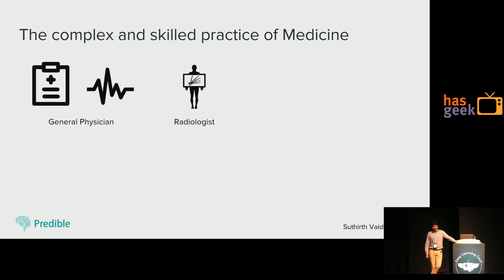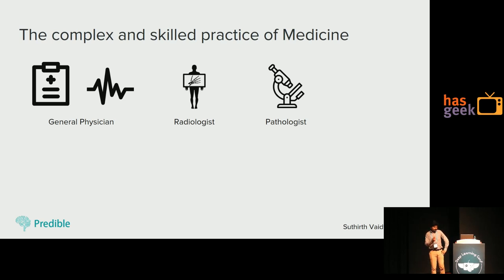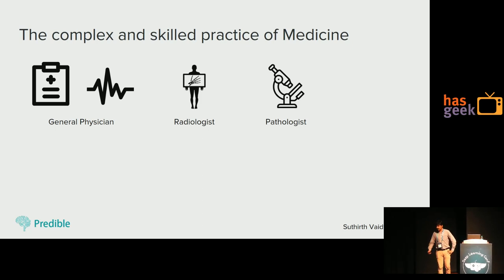You go back to the doctor. The doctor says, okay, this looks like TB — maybe something. He says let's get a pathology done, let's get a biopsy test done. So you go to the pathologist. You get a blood sample, you get a tissue biopsy done — some sort of pathology test.